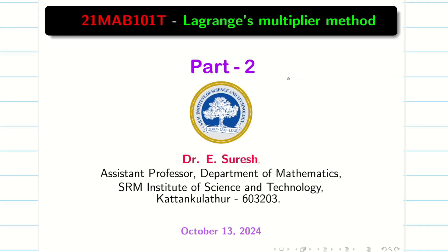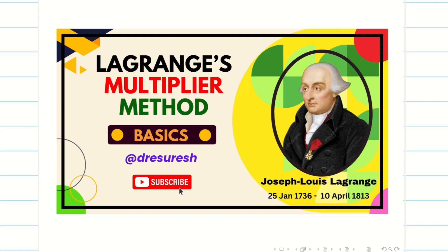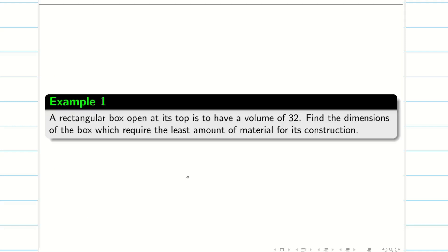Dear students, welcome to the problem solving session on Lagrangian multiplier method part 2. Those who haven't watched the Lagrangian multipliers method basics, go to the playlist and watch the basics video and come back here. In the previous video, we were dealing with the basic ideas and procedure on how to solve problems using the Lagrangian method. I noted that this method does not specify whether the extremal values obtained are a maximum or minimum — it is usually decided from the physical and geometrical consideration of the problem.